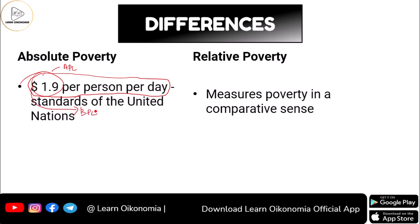This is with respect to absolute poverty. In the case of relative poverty, poverty is considered in a comparative sense — you will have two people, and you consider the income of these two people. The income of person one and person two are taken and compared in the case of relative poverty.